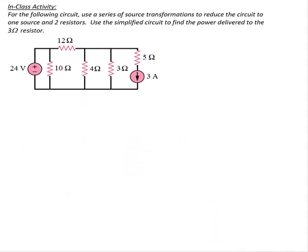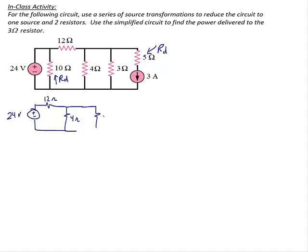Now let's try an example that involves dummy resistors. We have a circuit and we want to find the power delivered to the 3-ohm resistor — but we will not touch the 3-ohm resistor when we simplify. Let's identify our dummy resistors. The 24-volt source has a 10-ohm resistor in parallel with it — that's the first dummy resistor RD. The 3-amp current source has a 5-ohm resistor in parallel with it — that's the second dummy resistor RD. I'm going to redraw the circuit and remove the dummy resistors, since they do not affect the source transformations.